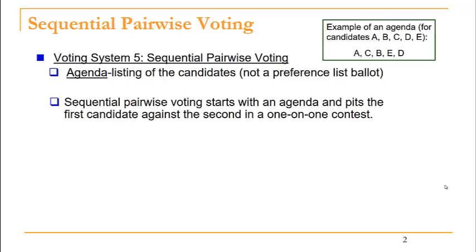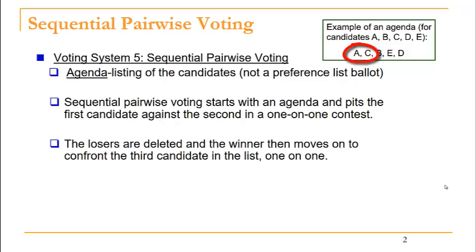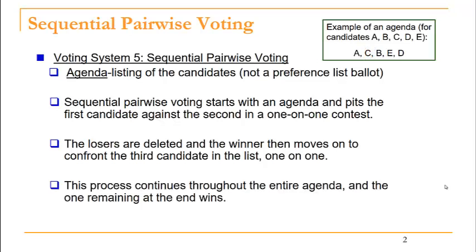Sequential pairwise voting starts with one of these agendas and pits the first candidate on the list against the second in a one-on-one contest. The loser is deleted and the winner moves on to confront the third candidate on the list. In our example, we would start by pitting A and C together — if A wins, C is deleted and A would then go one-on-one against candidate B.